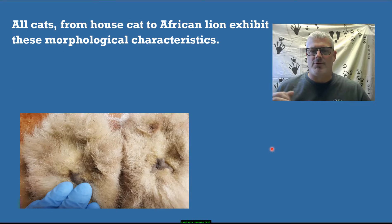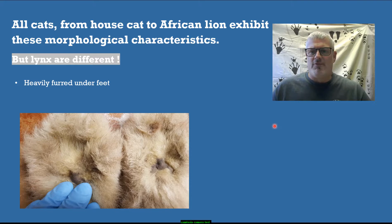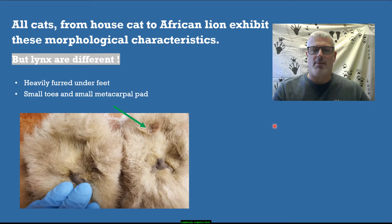All cats — whether a house cat or an African lion — will exhibit these feline characteristics. Except lynx kind of throw a kink into things. If you ever look at the bottom of a lynx foot, it's incredibly heavily furred underneath. They also have very small toes and a small metacarpal pad, so when you combine those small toes and small metacarpal pad with a lot of fur, it has a real impact on what you're seeing in the track.